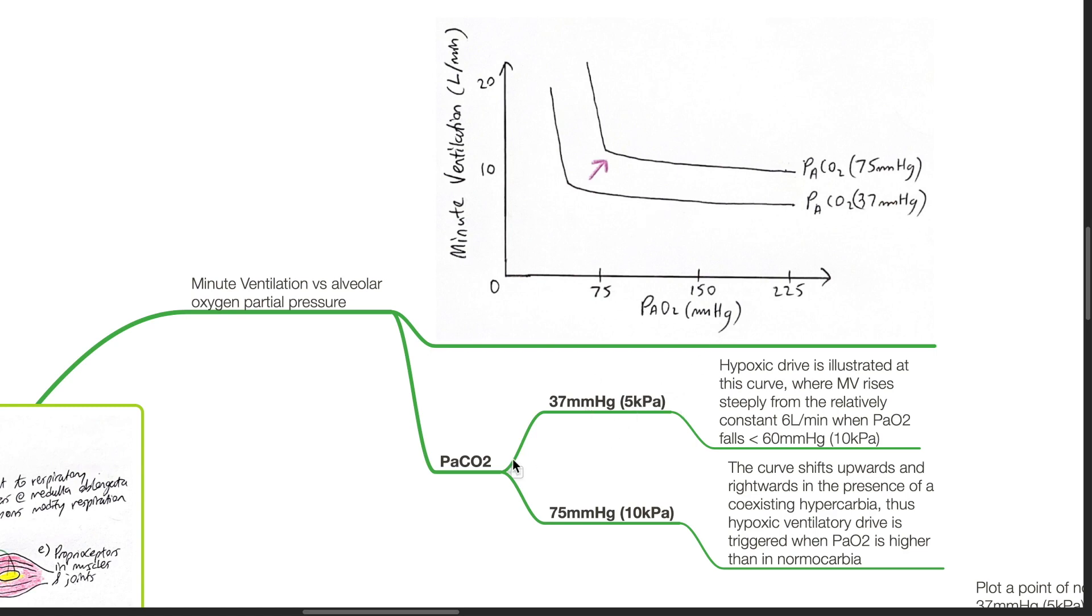There are two curves. At a PaCO2 of 37 mmHg, hypoxic drive is illustrated at this curve, where minute ventilation rises steeply from the relatively constant 6 liters per minute when PaO2 falls below 60 mmHg.